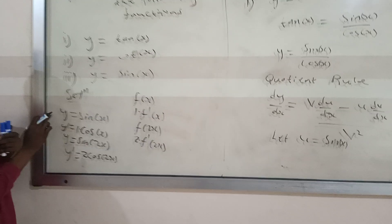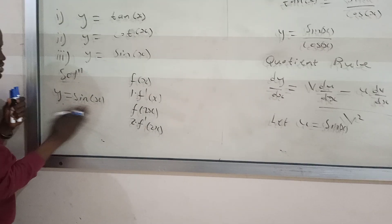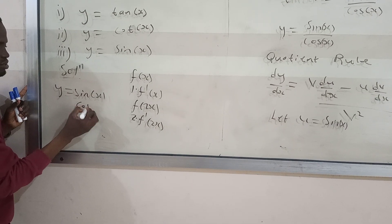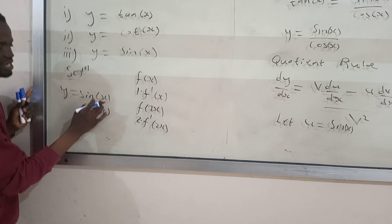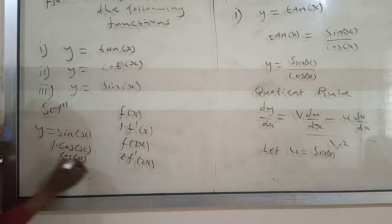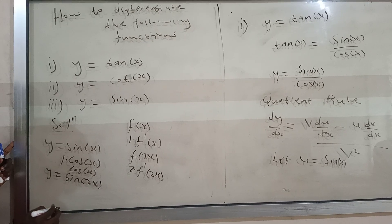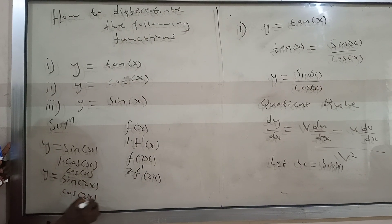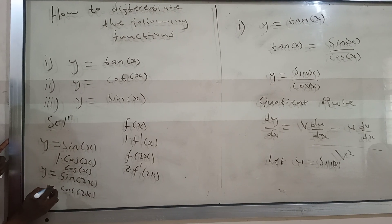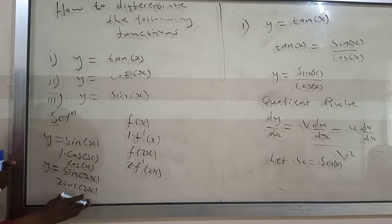The same idea applies when you come to sine. If you differentiate sin x, you get cos x. But that's not all — you have to differentiate the one in the bracket and multiply, giving you one times cos x, which is cos x. If you have y equal to sin 2x, that becomes cos 2x, and you differentiate the 2x in the bracket to get 2, so the answer is 2 cos 2x.